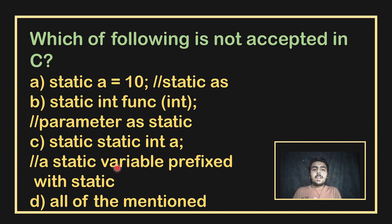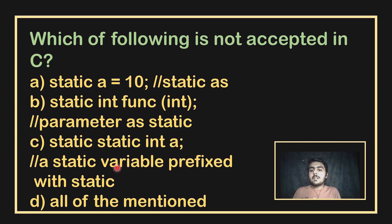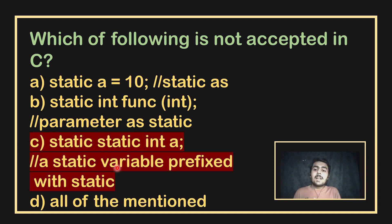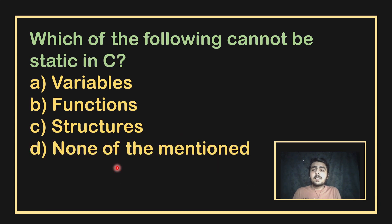Which of the following is not accepted in C? The options include: static A = 10, static int function with an argument, and static int a. Using static twice — writing static static int — is an invalid statement. So the answer is option C, where static is used twice.